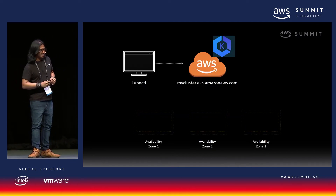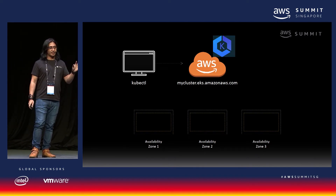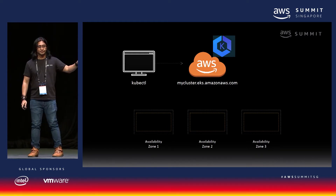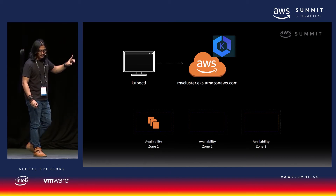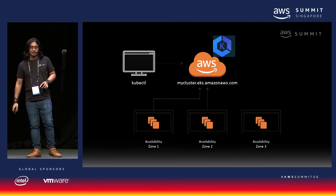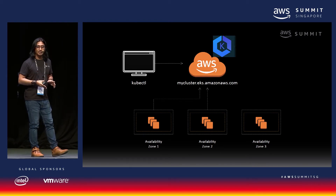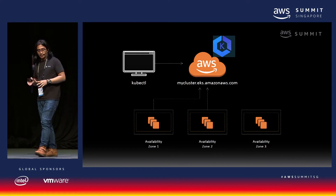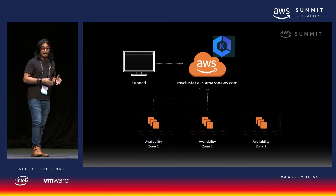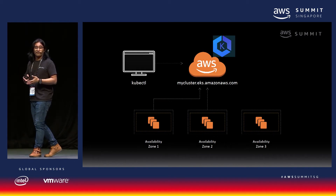With EKS, the complexity of standing up your own Kubernetes control plane is really simplified. Let's say you want to deploy containers across availability zones 1, 2, and 3. All you need to do is connect to mycluster.eks.amazonaws.com. This makes it easy for worker nodes to check into the cluster, and you can still interact with your Kubernetes cluster through the tooling you already know and are familiar with.